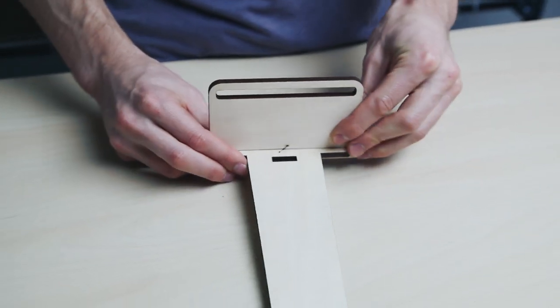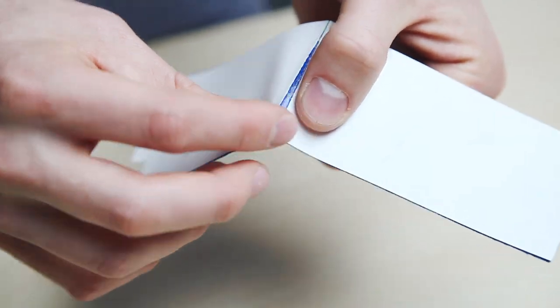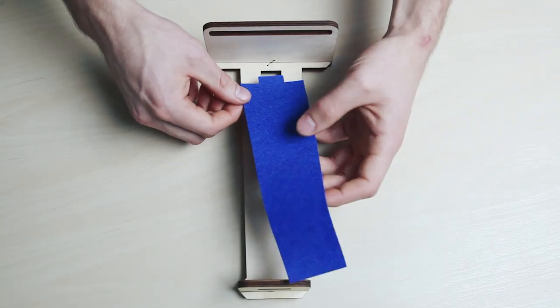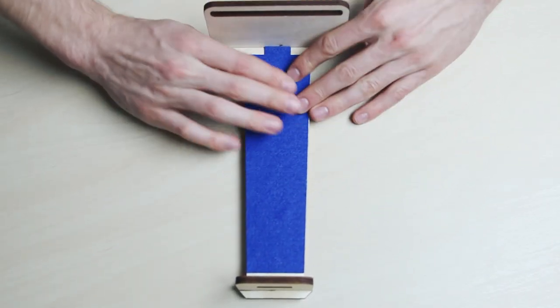Slide the two support pieces onto the base. Remove the backing from the blue sticky felt and attach it to the base. Make sure the edge of the tab lines up with the edge of the big support piece.